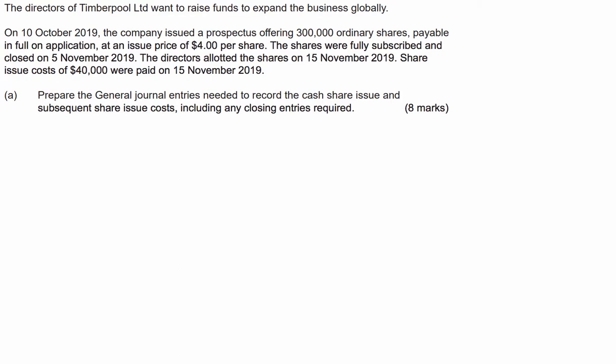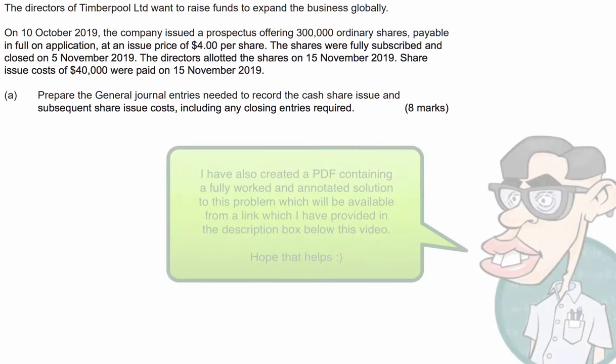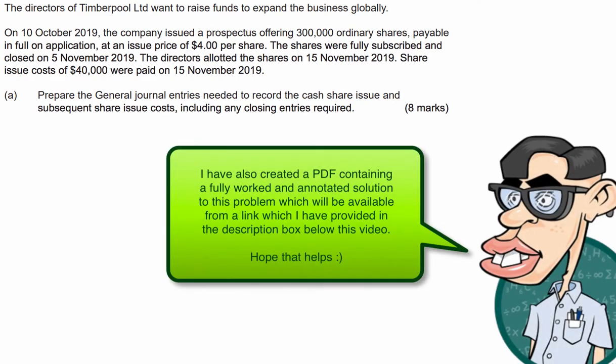G'day guys, we've got a financial accounting question today where we've got a company that's going to undertake a share issue in order to raise funds so it can expand to the global marketplace. So on October the 10th, 2019, the company issued a prospectus offering 300,000 ordinary shares payable in full on application at an issue price of $4 a share.